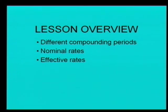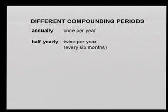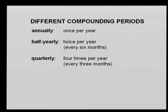Looking at the different compounding periods, we'll quickly look at the annual rate. Annually means once per year. Half-yearly happens twice a year — that means every six months you have an interest. Quarterly is four times per year, which is every three months. Very important: quarterly means four times in the year — that does not mean every four months, it is every three months.